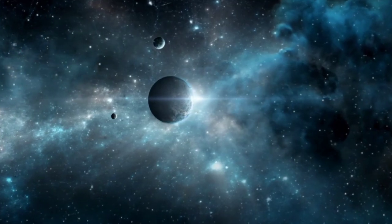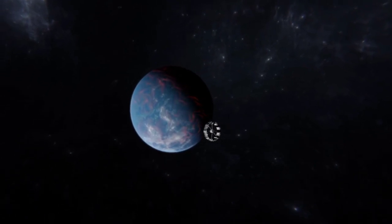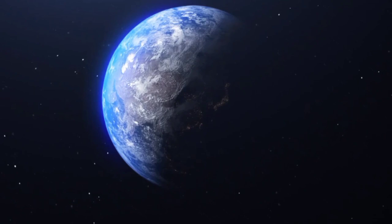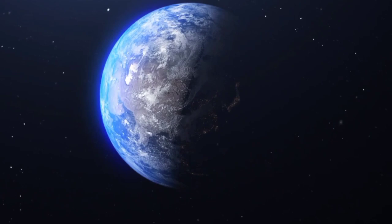Pluto's journey around the Sun is unique compared to other planets. It takes an extensive 248 years to complete a single orbit, meaning that since its discovery in 1930, Pluto has not yet completed one full revolution.